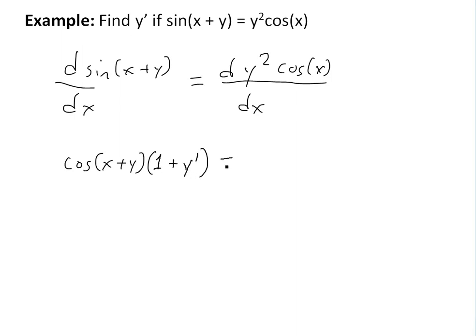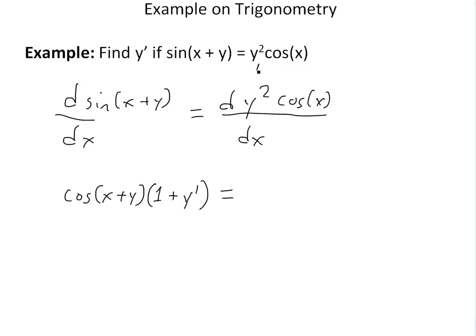On the right side, using product rule: first we take derivative of y squared, that's going to be 2y, then using chain rule, y prime, times this function cos of x. But now we have to add—we keep the y squared and now take derivative of cos of x, and that's going to be negative sine of x.